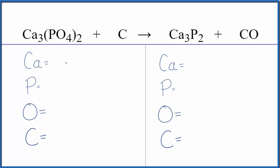Let's count the atoms up and balance the equation. We have three calcium atoms. For phosphorus, two times one gives us two phosphorus atoms. Two times four gives us eight oxygens. One carbon. On the product side we have three calcium, two phosphorus, one oxygen, and one carbon.